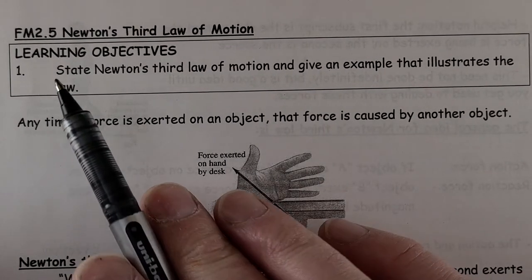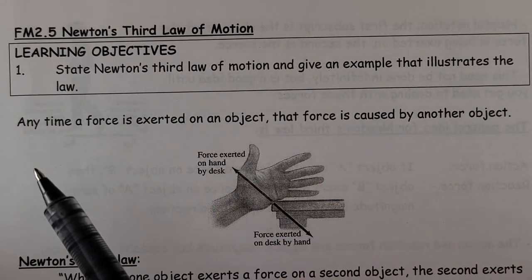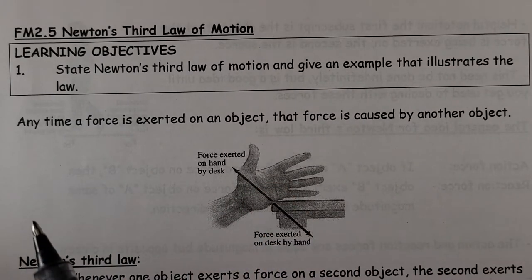Welcome back, Physics 30. This is FM 2.5, Newton's third law. So this is the third law we'll be looking at.